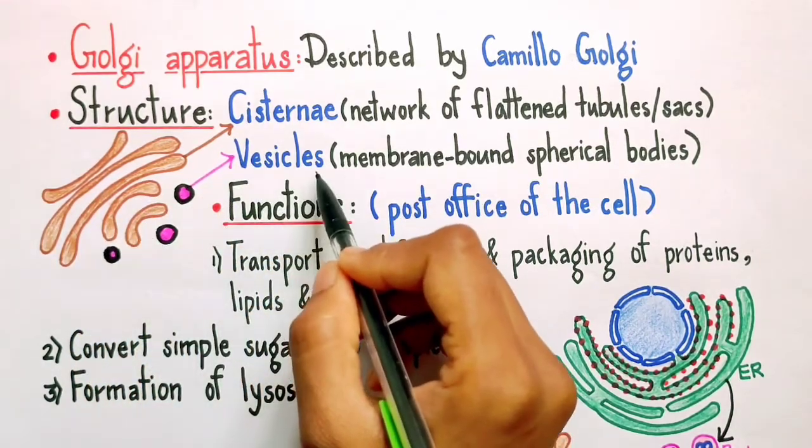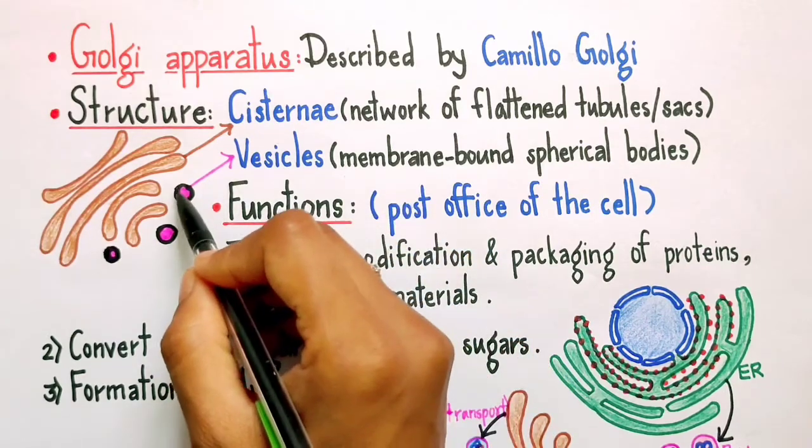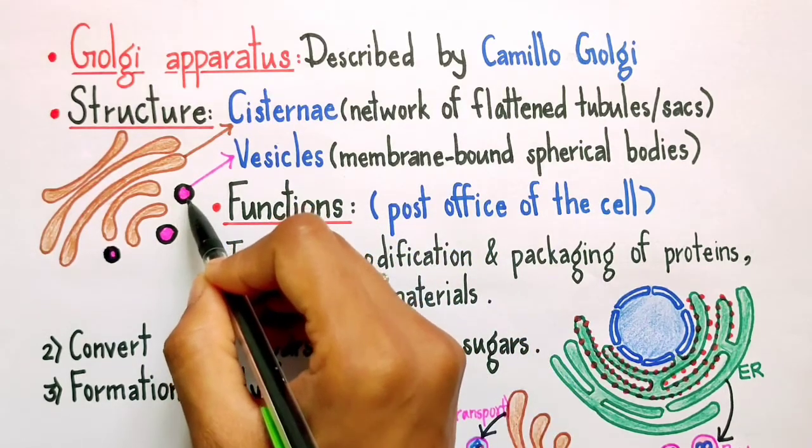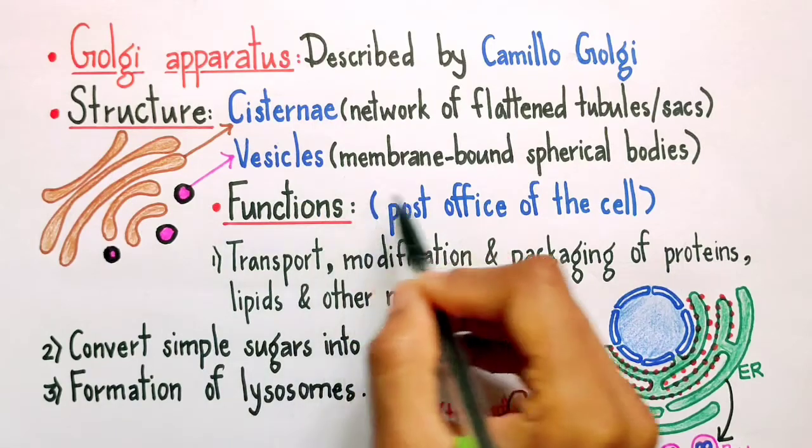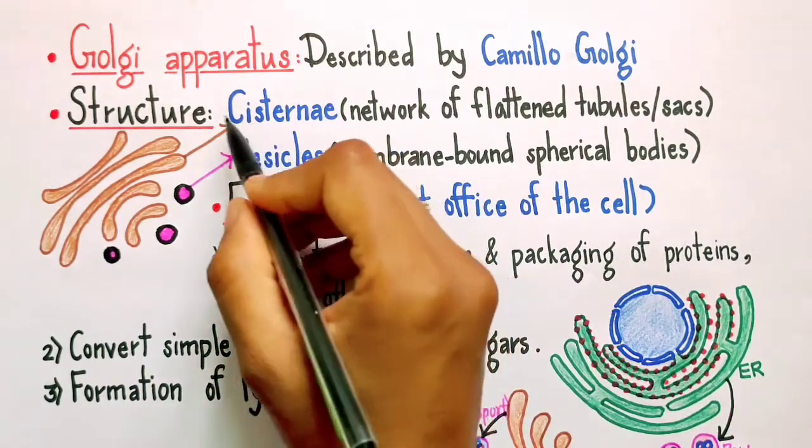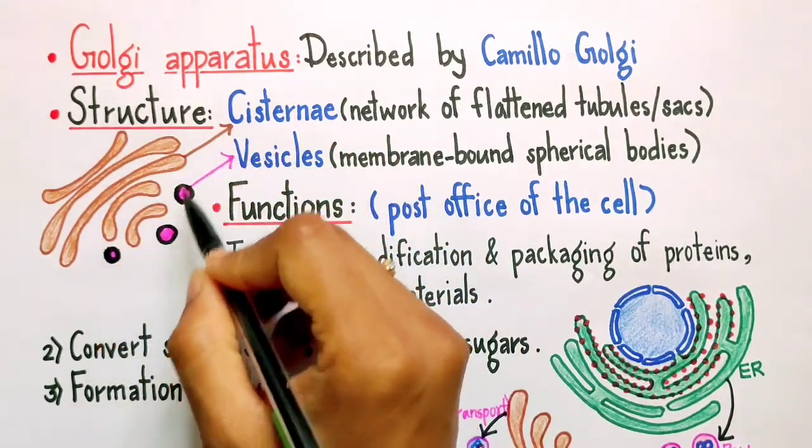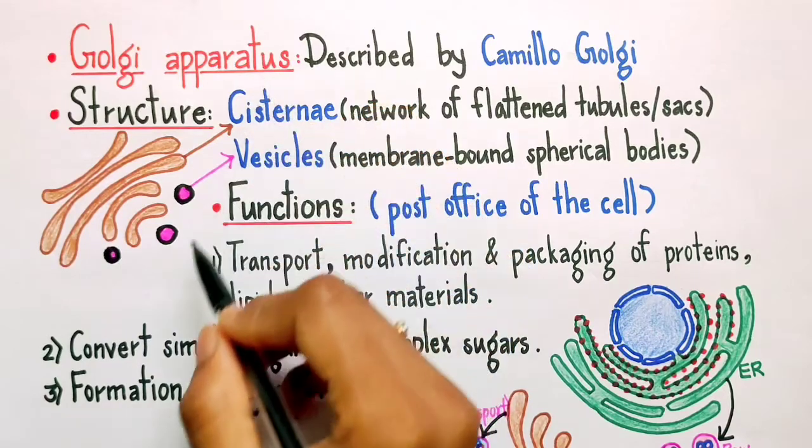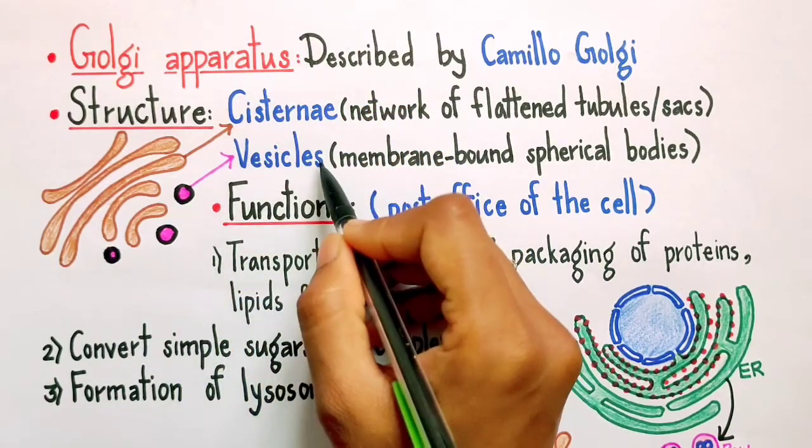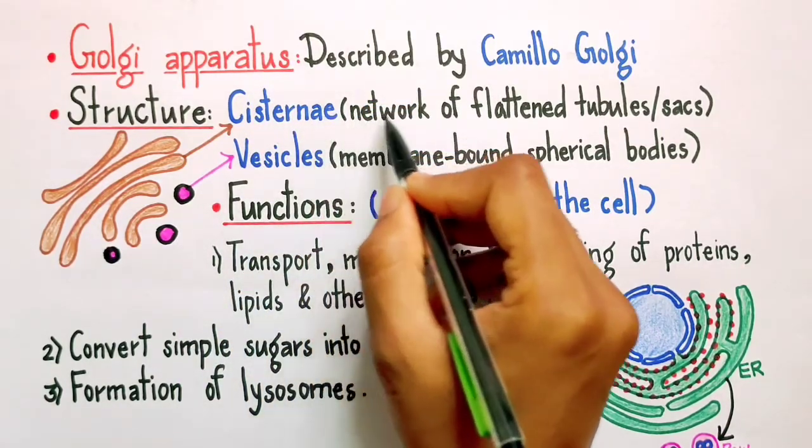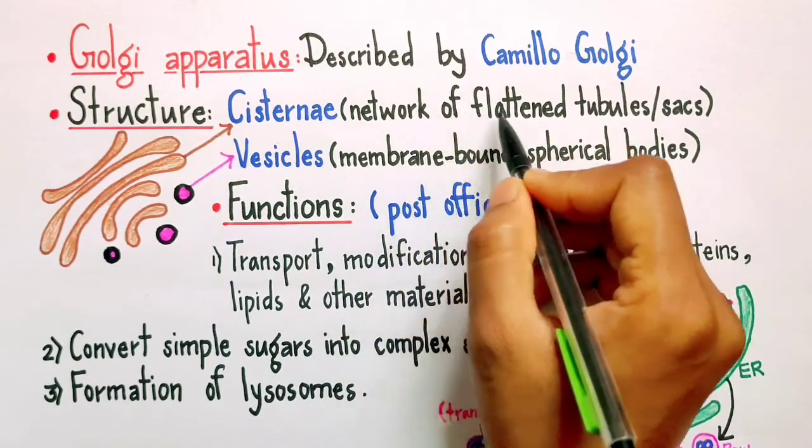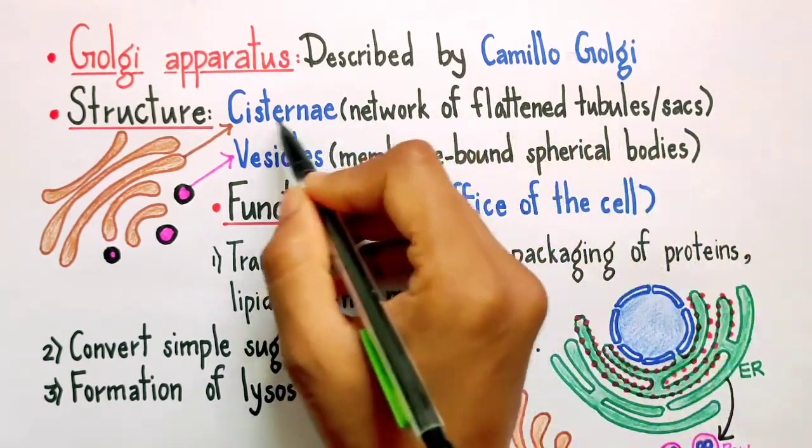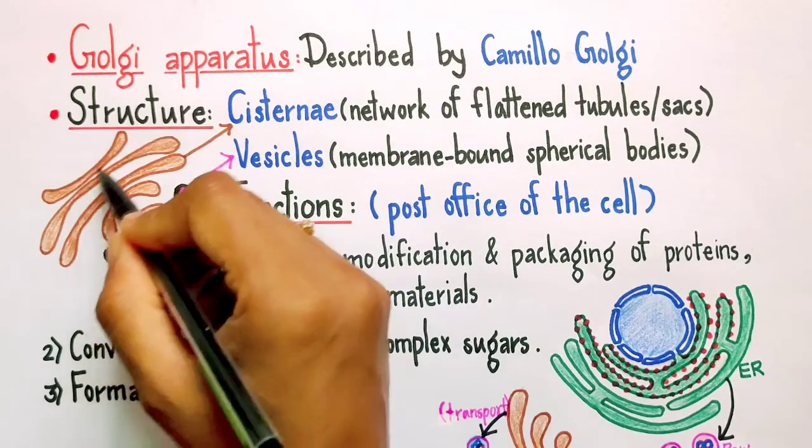What about these vesicles? Vesicles are membrane-bound bodies which are more or less spherical in shape. So on the whole, I can say Golgi apparatus consists of vesicles and a network of membrane-bound flattened tubules called cisternae which are arranged approximately parallel to each other in stacks.